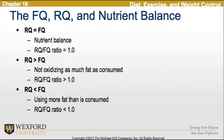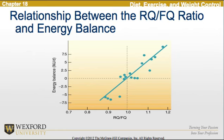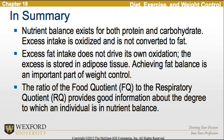This graph represents the relationship between the RQ-to-FQ ratio and energy balance. In summary, nutrient balance exists for both protein and carbohydrate — excess intake is oxidized and is not converted to fat. Excess fat intake does not drive its own oxidation; the excess is stored in adipose tissue. Achieving fat balance is an important part of weight control. The ratio of food quotient to respiratory quotient provides good information about the degree to which an individual is in nutrient balance.